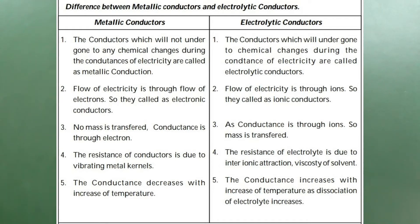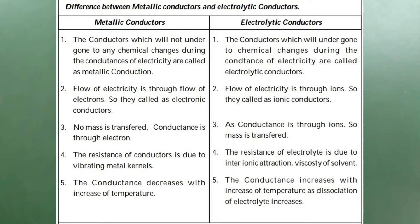Fourth difference: In metallic conductors, the resistance of the conductor is due to the vibrating metal kernels. In metal conductors we have positive metal kernels, and because of their vibration they make resistance to the flow of electrons. In the case of electrolytic conductors, the resistance of the electrolyte is due to interionic attractions and the viscosity of the solvent.